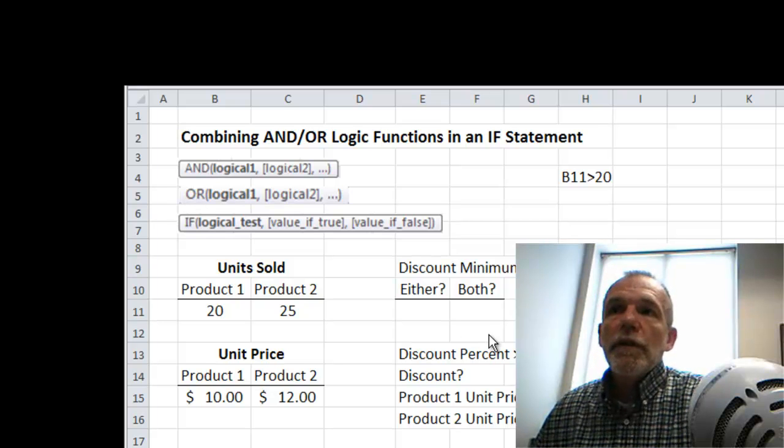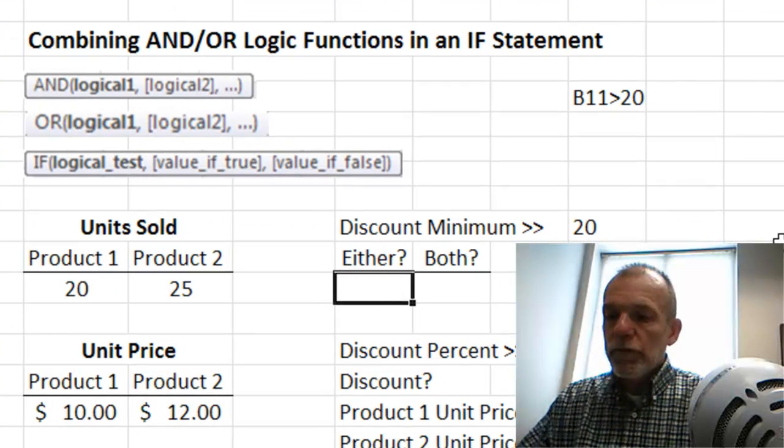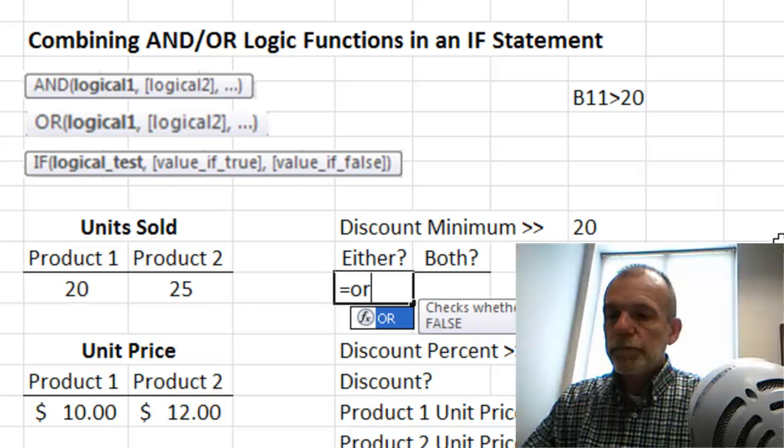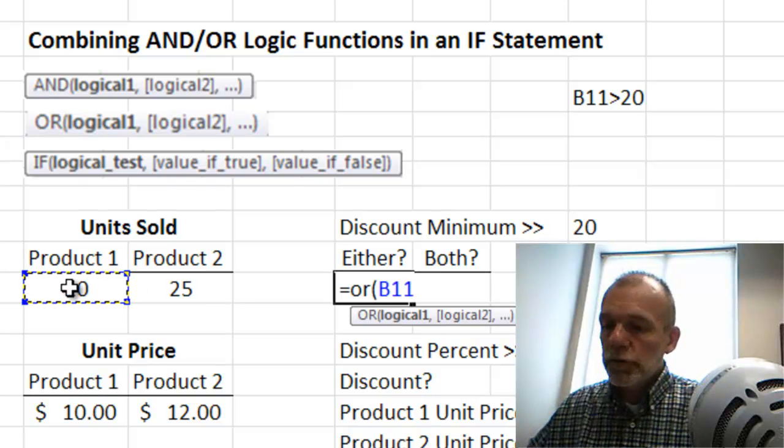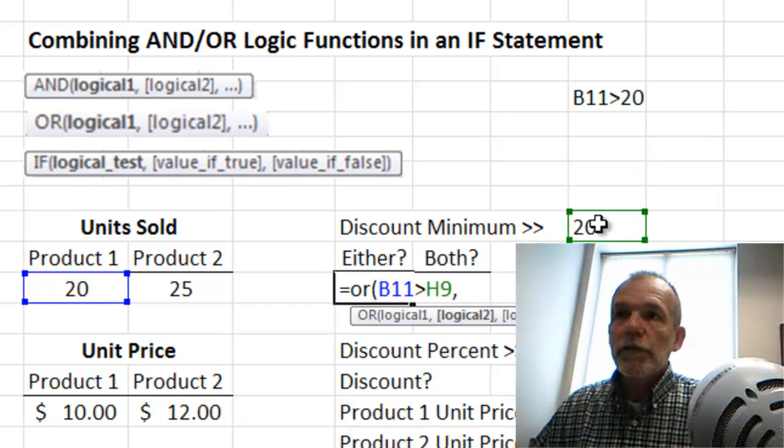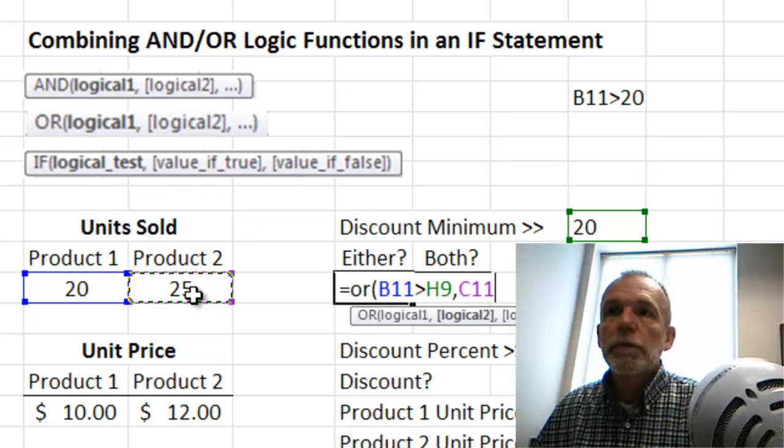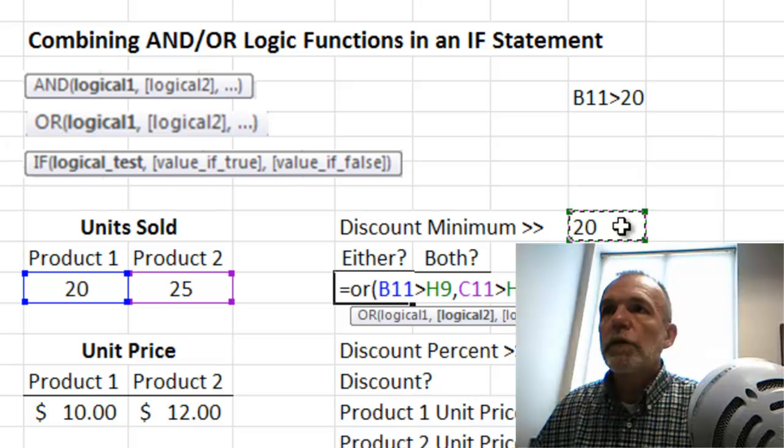So let's try that out here in this cell. So that's the OR condition: OR, is product 1 units sold greater than 20, and logical 2, or product 2 units sold more than 20.